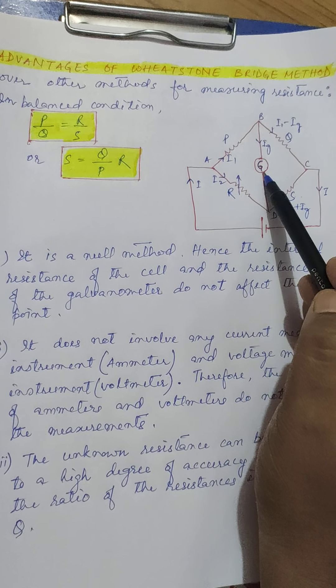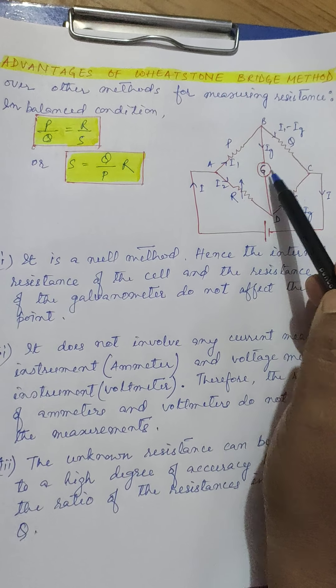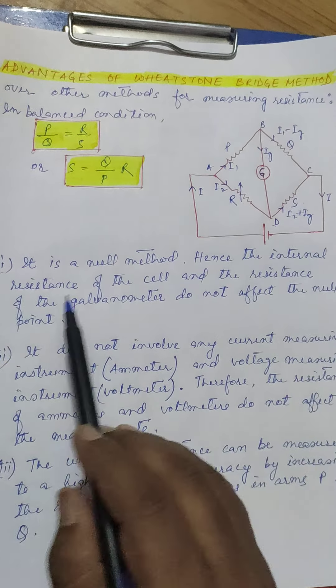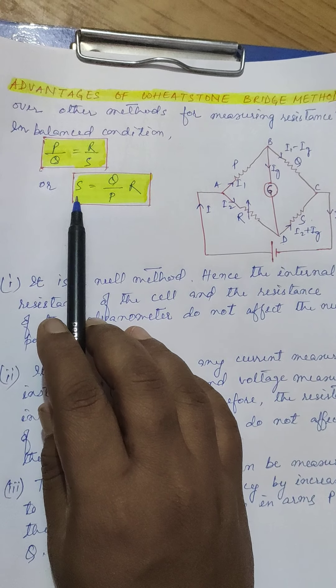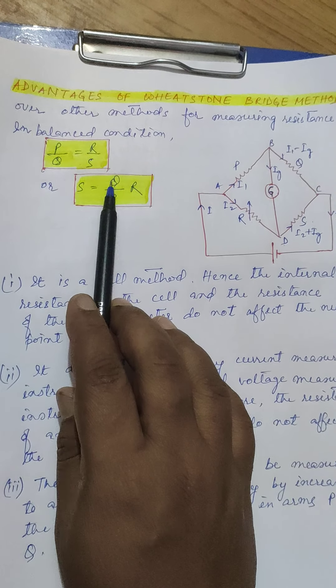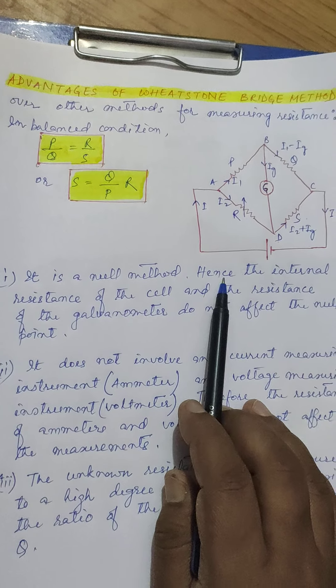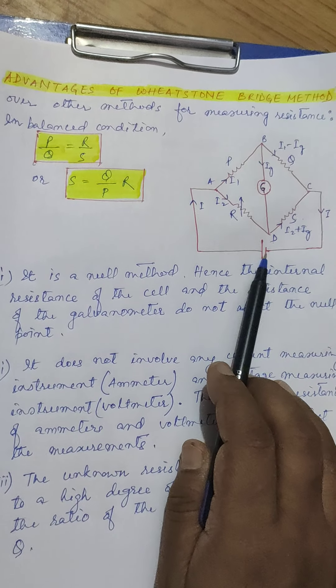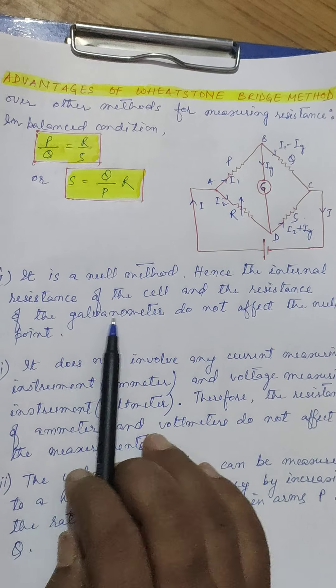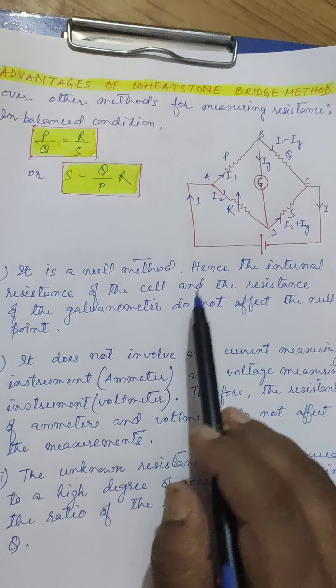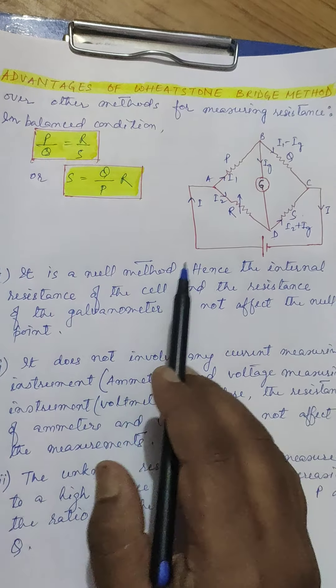So if the current through the galvanometer is zero, hence the internal resistance, when we are measuring, you can see the formula S is equal to Q by P into R. So the internal resistance of the cell which we are using here and the resistance of the galvanometer, they don't have any effect on the null point.